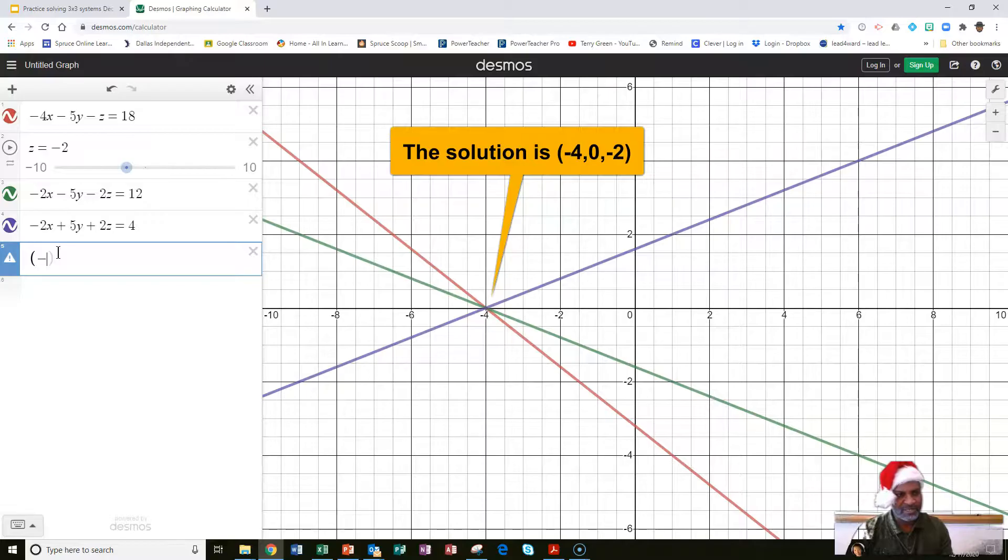You got negative 4 for x, you got 0 for y, and then you got a negative 2 for z. And so, that is your solution to this system. These are the three values of x, y, and z that will make all three of these equations true.